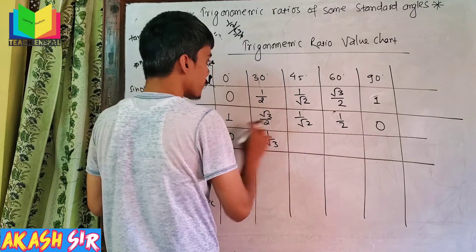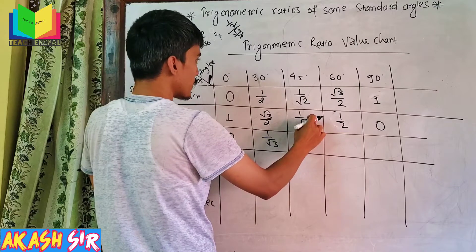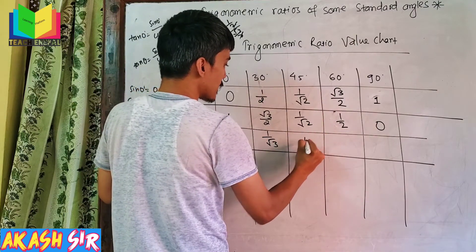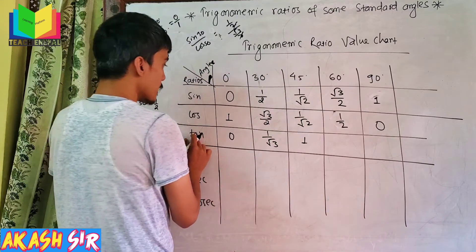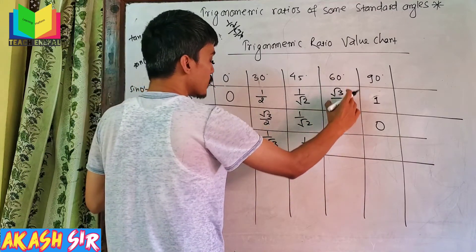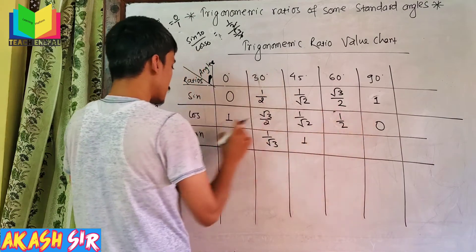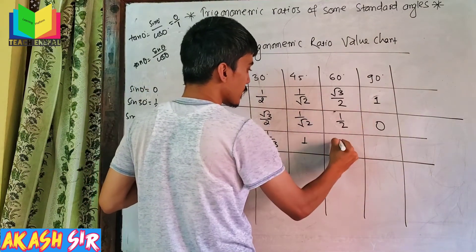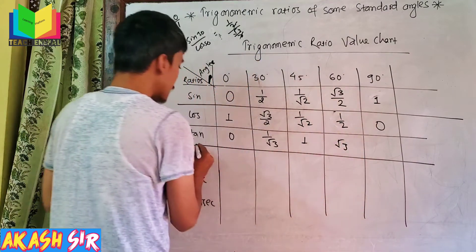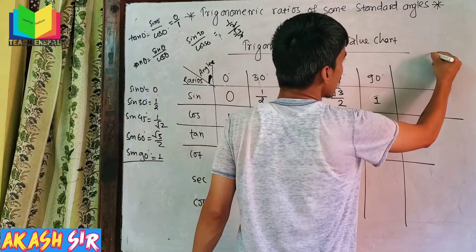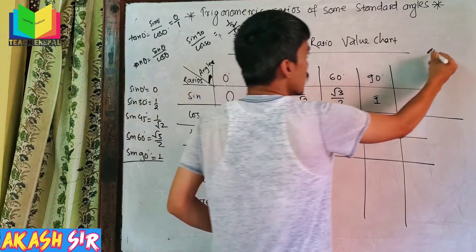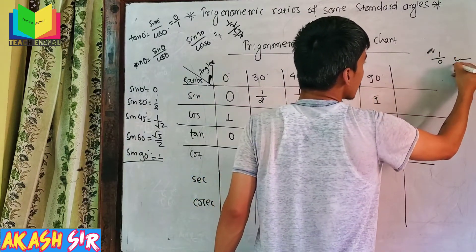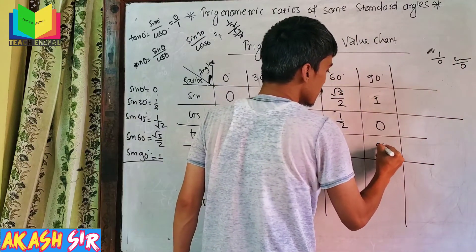If we take tan 45, then sin 45 by cos 45 — root 2 cancels out and 1 divided by 1 means 1. If we take tan 60, then sin 60 by cos 60 gives root 3 by 1, which means root 3. If we take tan 90, then sin 90 by cos 90, and cos 90 is 0, so 1 by 0 means infinite.